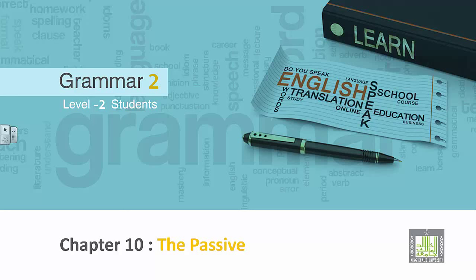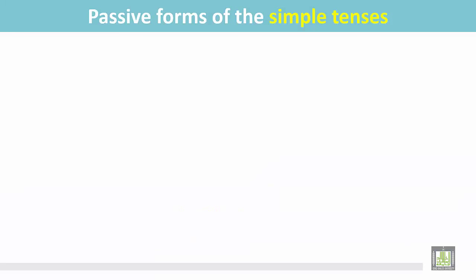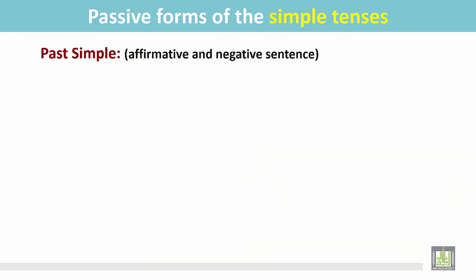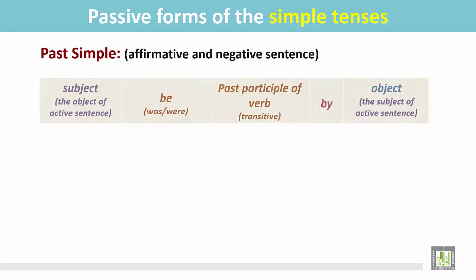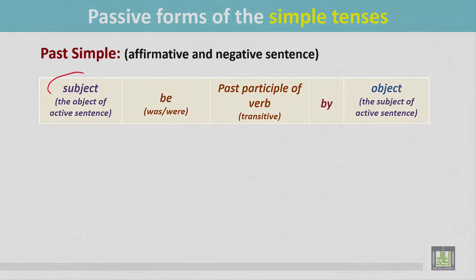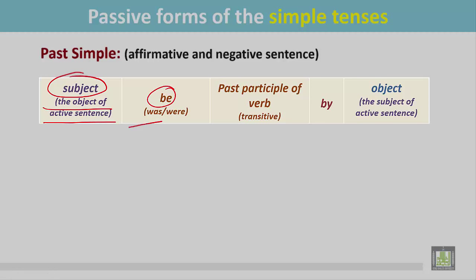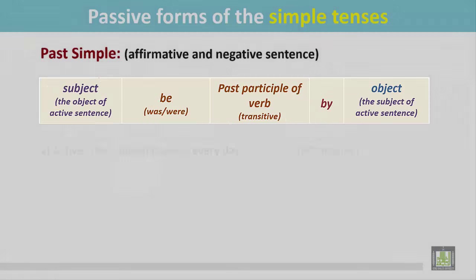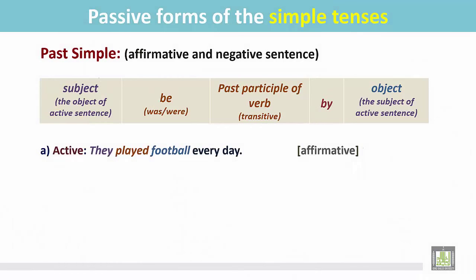Grammar 2 for Level 2 students, Chapter 10: the passive. Passive forms of the simple tenses — past simple affirmative and negative. See the structure: the subject comes from the object of the active sentence, then we place the be verb — if the subject is singular, put 'was'; if plural, put 'were' — then the past participle form of the transitive verb, the preposition 'by', and finally the object.